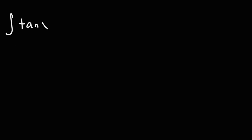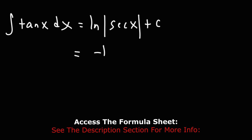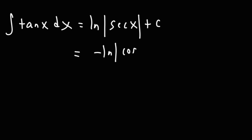The indefinite integral of tangent x is the natural log of the absolute value of secant x plus c. Now, secant is the reciprocal of cosine — secant x is 1 over cosine x — so this is also negative ln of cosine x plus c. If you move the negative 1 to the front, you get cosine x to the negative 1, which is 1 over cosine, which is secant. So that's why we have the negative sign there.